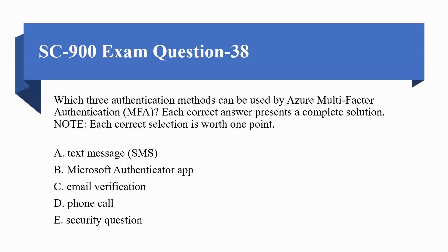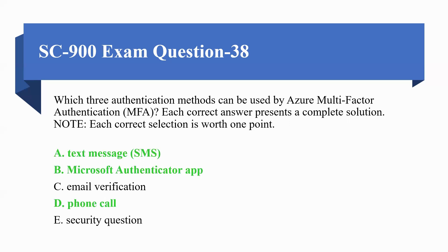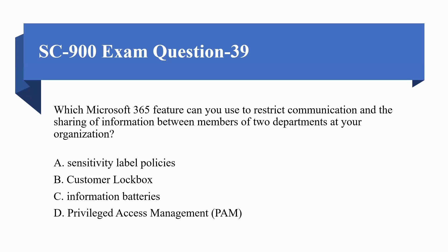Next question: which three authentication methods can be used by Azure Multi-Factor Authentication? Options are: A) Text message, B) Microsoft Authenticator app, C) Security token, D) Phone call, E) Security question. The correct three options are A) text message, B) Microsoft Authenticator app, and D) phone call.